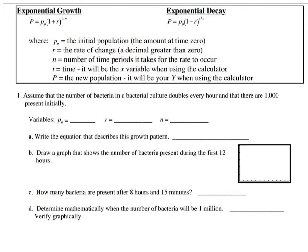That's why for growth you take your rate and add it to one. The reason it's added to one is just like what we did with the financial stuff. You have 100% of your money, or 100% of whatever you're starting with, and you're adding on some percent, and we make that a decimal.